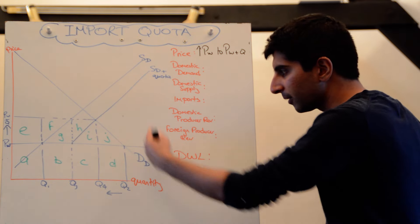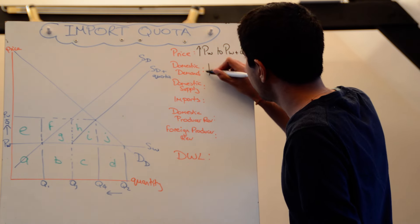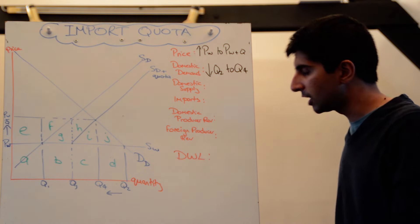What's happened to domestic demand? Because the price has gone up, domestic demand has contracted. So that's gone down initially from Q2 to now Q4. So a reduction, a contraction in domestic demand.